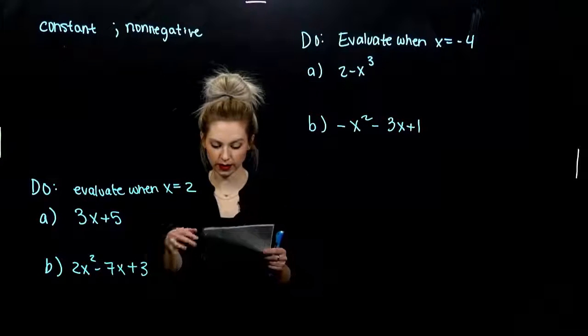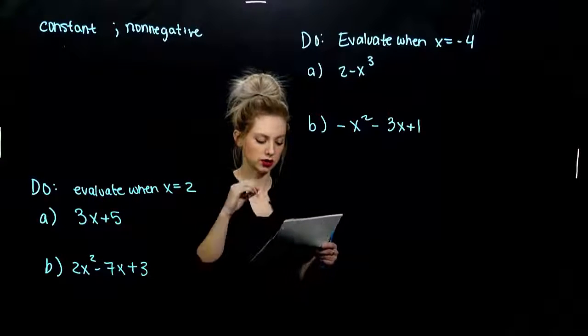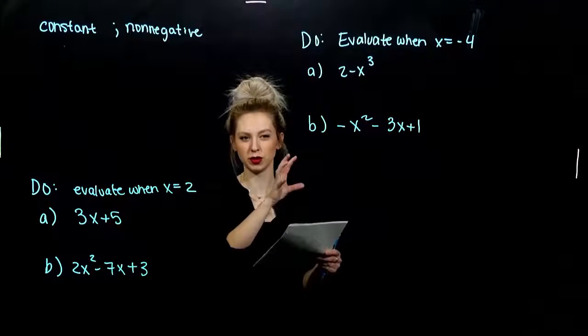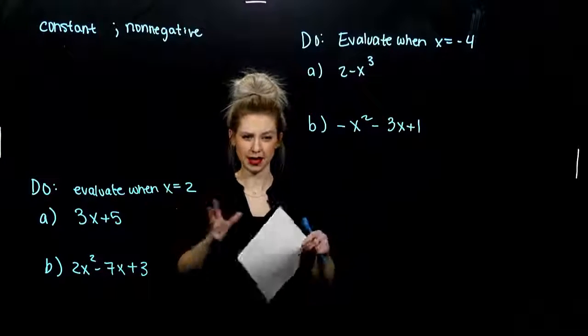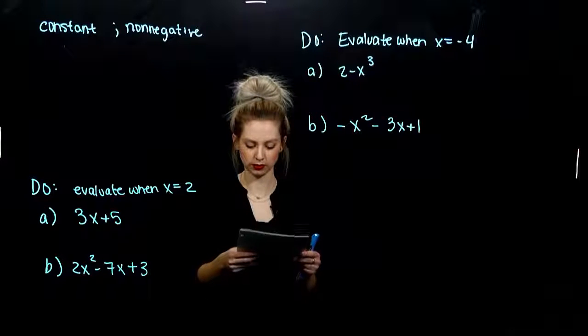A polynomial is a monomial, what we've just seen, or a combination of sums or differences of those monomials. If I take a bunch of monomials, whatever they look like, combine them together by adding or subtracting, we look at polynomials.